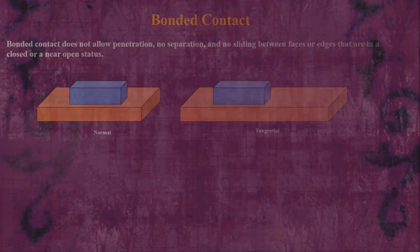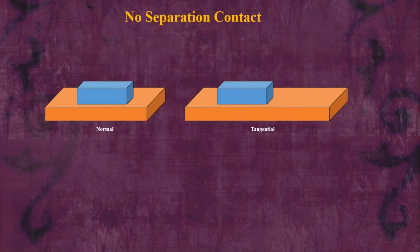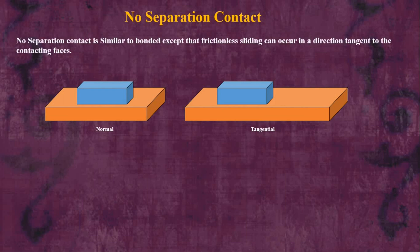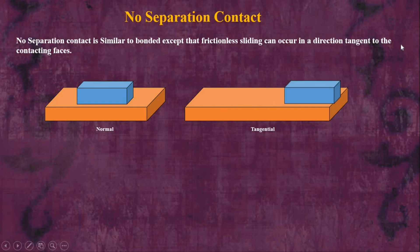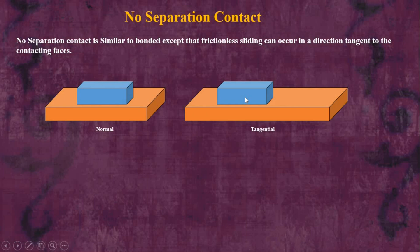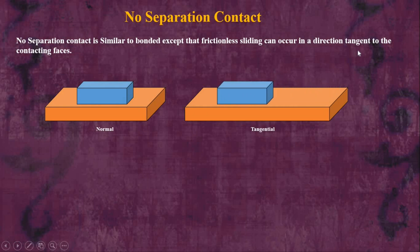Now let's talk about another type of linear contact — no separation contact. This is similar to bonded contact, with the difference that frictionless sliding can occur in the direction tangent to the contacting faces.